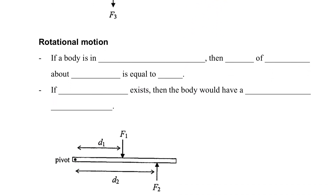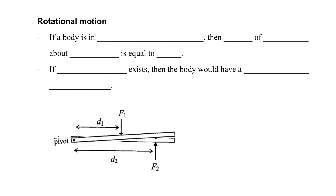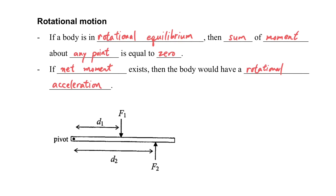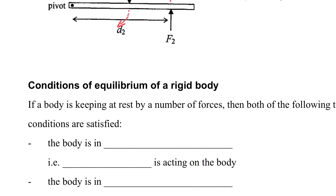Rotational motion can also be in equilibrium. If an object is in rotational equilibrium, the sum of the moments about any point will be equal to zero — the net moment will be zero. If the net moment exists, the body will have a rotational acceleration, meaning it rotates faster and faster, or slower and slower. If the rod is in equilibrium, the total clockwise moment equals the total anti-clockwise moment, so F1×d1 equals F2×d2.